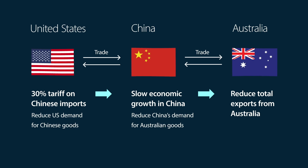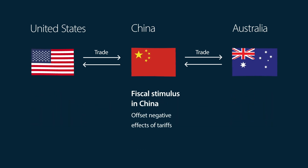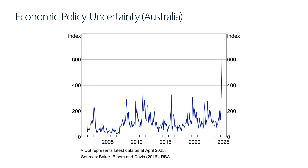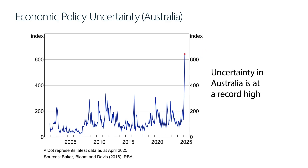Overall, we think this indirect effect will be limited. This is because Chinese fiscal policy is expected to offset the negative effects of tariffs on Chinese economic growth. Second, the increased policy uncertainty, as we mentioned earlier, could also affect Australian economic activity. For example, if Australian companies are not sure about how things will pan out, they may choose not to invest.